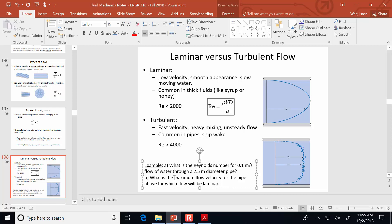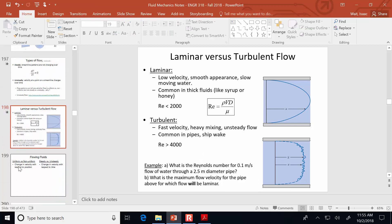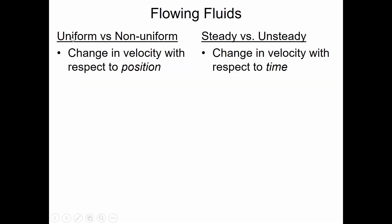To summarize, the ways to classify flow are: steady versus unsteady, uniform versus non-uniform, and laminar versus turbulent. With those three classifications we can understand a lot about how water moves. Uniform versus non-uniform is about how velocity changes with respect to position; steady versus unsteady is about how velocity changes with respect to time. There will be more comparisons added as we discuss applications and different formulas for each condition.